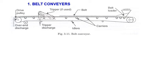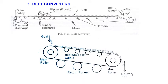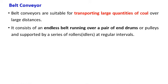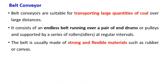The system has bearings and a shaft at one end. The coal is fed onto the conveyor belt and delivered out at the other end. Belt conveyors are suitable for transporting large quantities of coal. It is an endless belt running over a pair of end drums or pulleys and supported by a series of rollers at regular intervals. The belt is usually made of a strong material such as rubber or canvas.